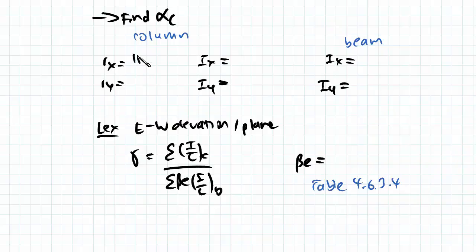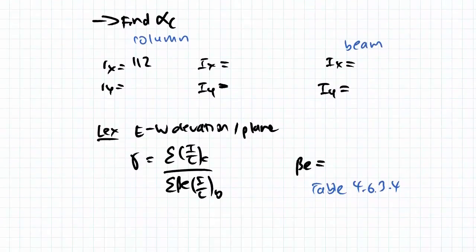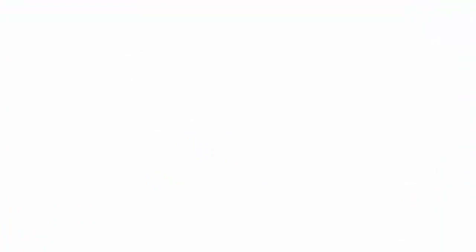So you can get these straight from the 1stool tables. For our column, remember that it is a 250 uc 89.5 and for our beam it's a 310 ub 32.0. So we go to 1stool tables and we can find these numbers.